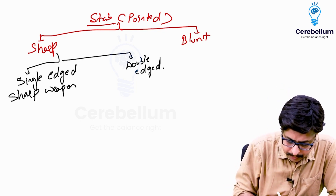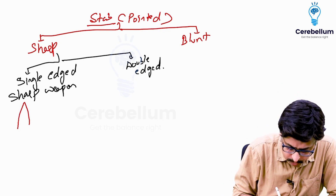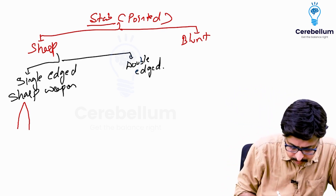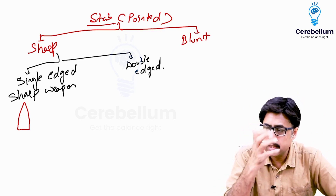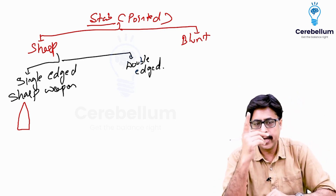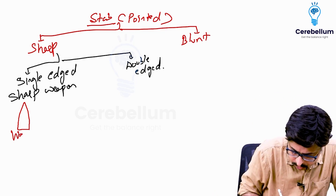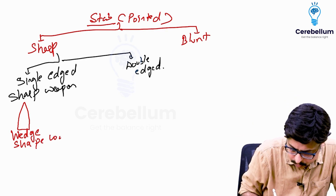In a single-edged weapon, this is the shape of the stab wound — one of the ends will be pointed, and the other end will be like this, because only one end is sharp. This is called a wedge shape wound.